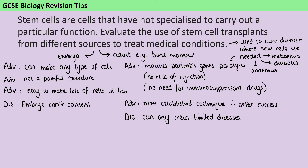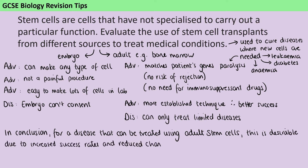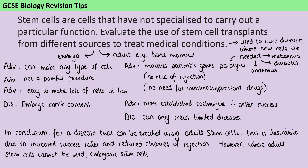It's really important that at the end of our answer we write a conclusion. For this question there isn't a really clear winner, so you'd be hedging your bets a bit. I would probably say something like: in conclusion, for a disease that can be treated using adult stem cells, this is desirable because of the increased success rates and the reduced chances of rejection. But where adult stem cells can't be used, embryonic stem cells can still cure many other conditions.